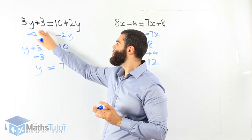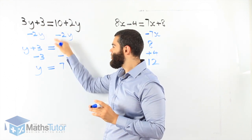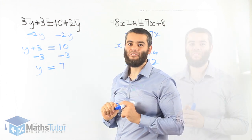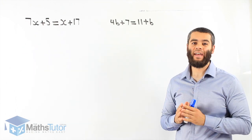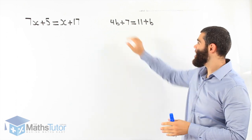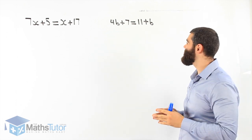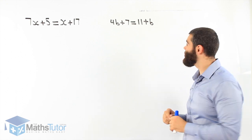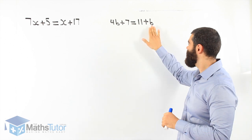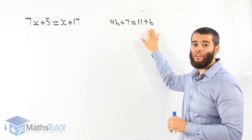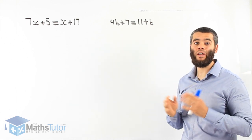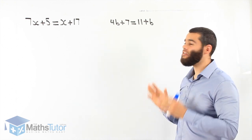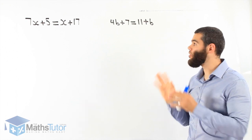Don't get confused — just because you have pronumerals on both sides, we follow this step and we get it right. Let's do some more examples. We have 4b plus 7 equals 11 plus b. Straight away you recognise 4b here and b on the other side — it's an equation with pronumerals on both sides, so we follow the same steps as before.